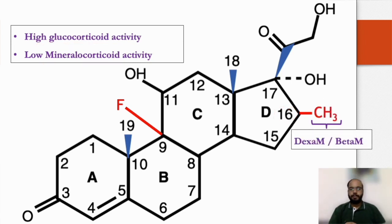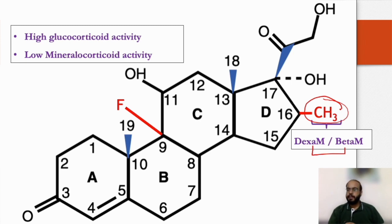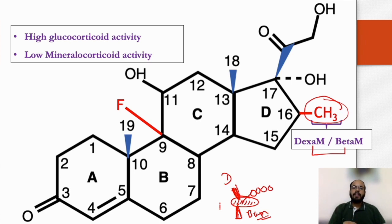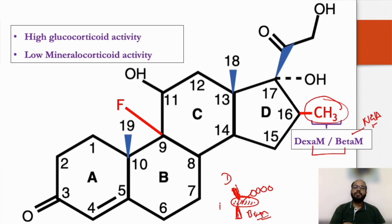If the hydroxyl group at the 16th position is replaced by a methyl group, it forms two very long-acting steroid molecules: dexamethasone and betamethasone. When the second part of the steroid molecule attaches, it forms a stereochemical plane. If the methyl group is towards the observer from that plane, it forms dexamethasone; if away from the plane, it forms betamethasone. An additional difference: betamethasone lacks non-genomic activity, unlike dexamethasone.